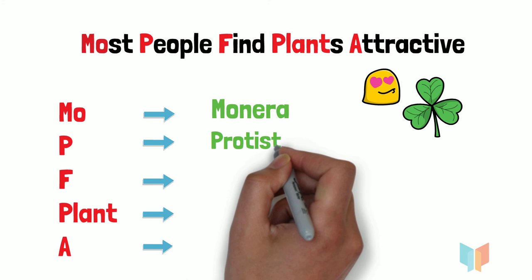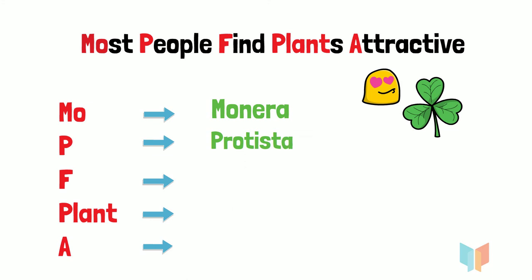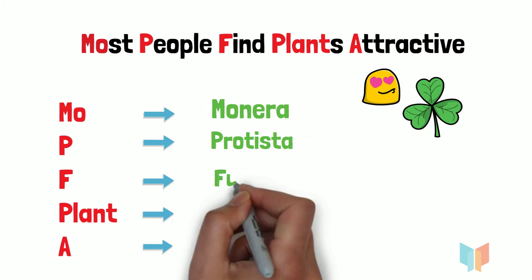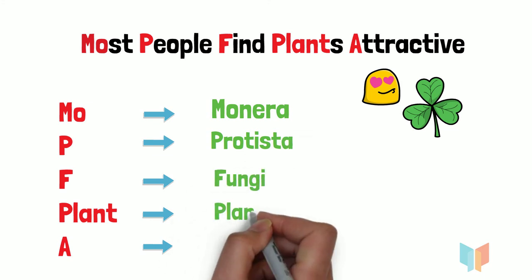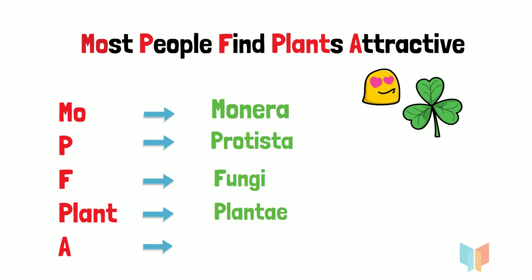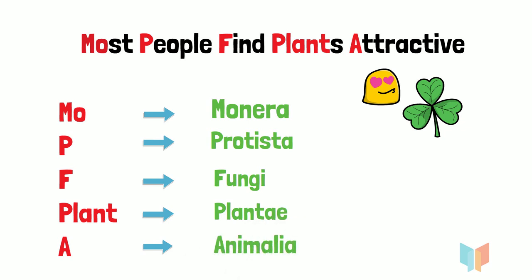P stands for Protista, F for Fungi, Plant for Plantae, and finally A for Animalia. So here you go — a simple and easy way to remember all five kingdoms.